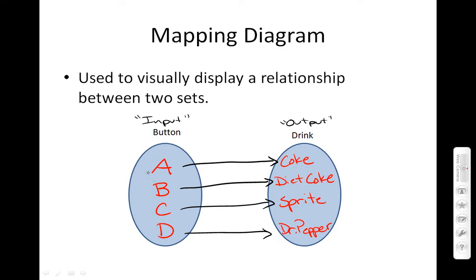When you press button A, you only got a Coke. When you press button B, you only got a Diet Coke. When you press button C, it was only matched with Sprite. And when you press button D, it was only matched with Dr. Pepper. So this is an example of a one-to-one mapping.